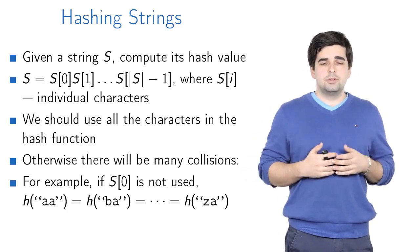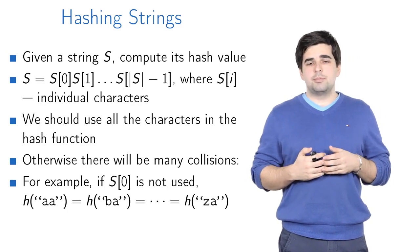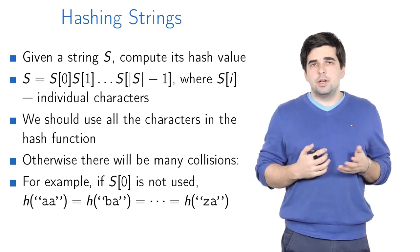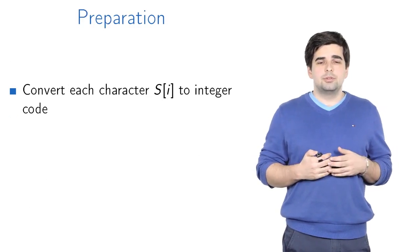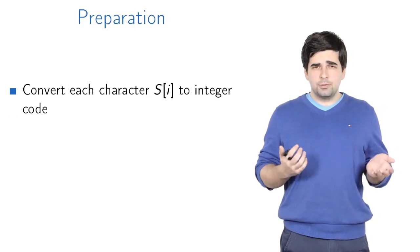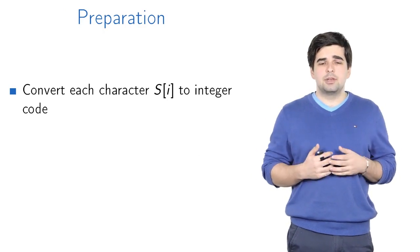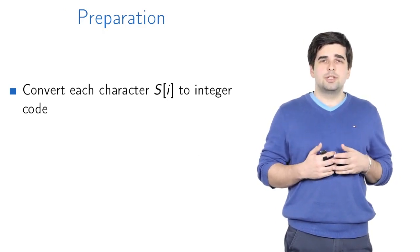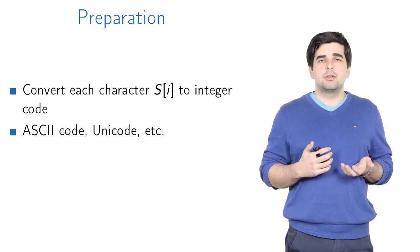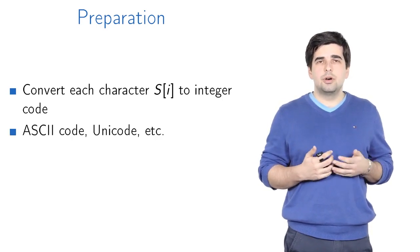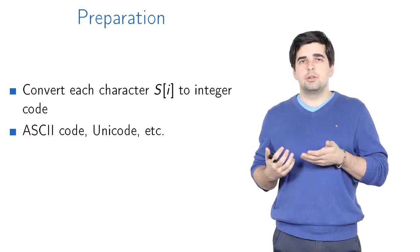Now we could do a lot of things with that—for example, sum the values of all the characters or multiply them—but we will do something different. First, to even compute something on a string, we need to convert each character of the string to an integer code. For example, that can be ASCII code or Unicode corresponding to that symbol on your computer. That doesn't really matter.